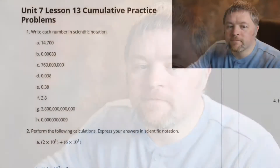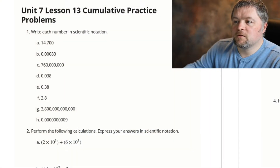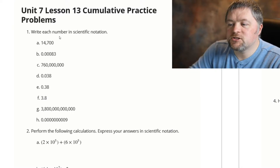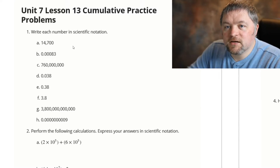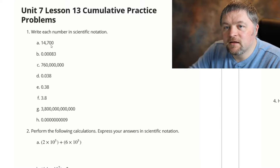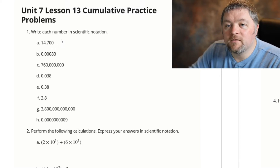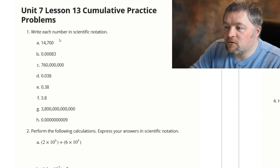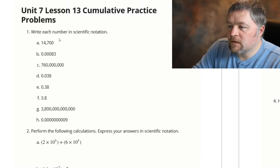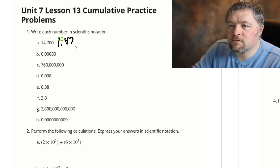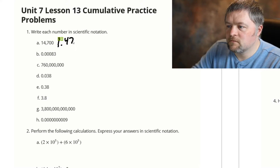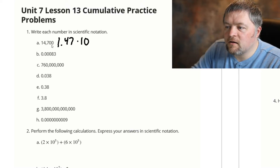Good morning and welcome to another Mr. Boskin Does Some Math. Today we are doing Illustrative Math Grade 8, Unit 7, Lesson 13 practice problems. The first thing we're asked to do is write each number in scientific notation. Scientific notation is one digit in front of the decimal place, times a power of 10 to get the number where we want it. For this first one: 1.47 times 10 to the power of how many spots do we move the decimal point?